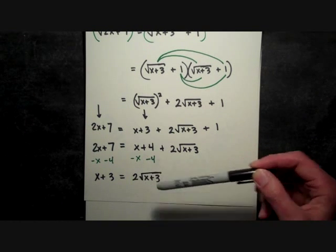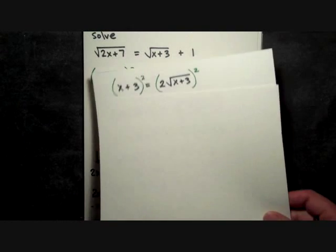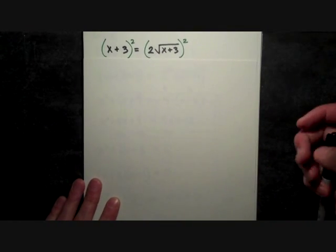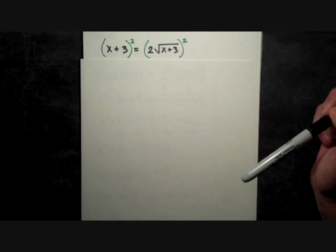So here's what we get when we square both sides of that equation: the x+3 on the left, and I'm leaving the 2 in front of the radical there. We remember we have a property of exponents that says if it's multiplication, then you can apply that exponent to each factor.